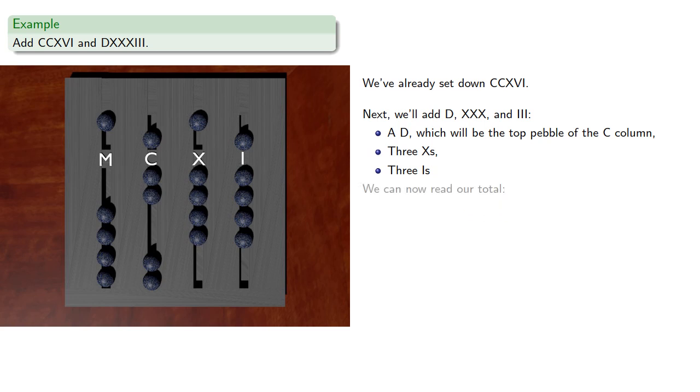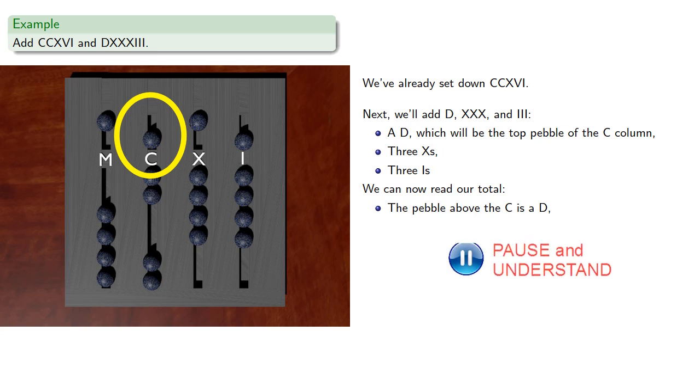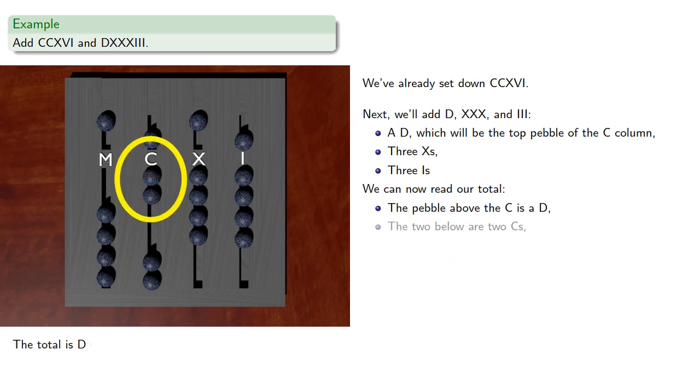And we can now read our total. The pebble above the C is a D. The two below are two C's. There are four X's.